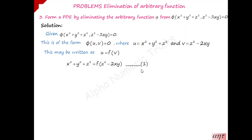In this equation 1, what is the order of the resulting PDE? It is 1. Because only one function is to be eliminated here, that is why the resulting PDE is of order 1. Now we will eliminate this function by differentiating equation 1 partially with respect to x and y.